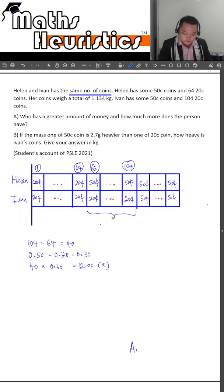Okay, so the answer for part A here will be Helen, and the amount will be $12.